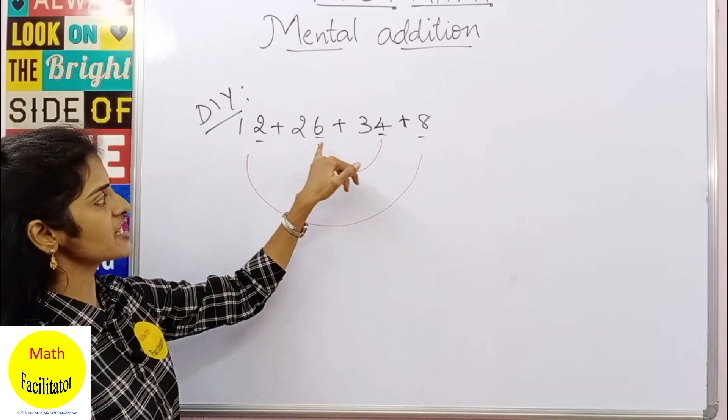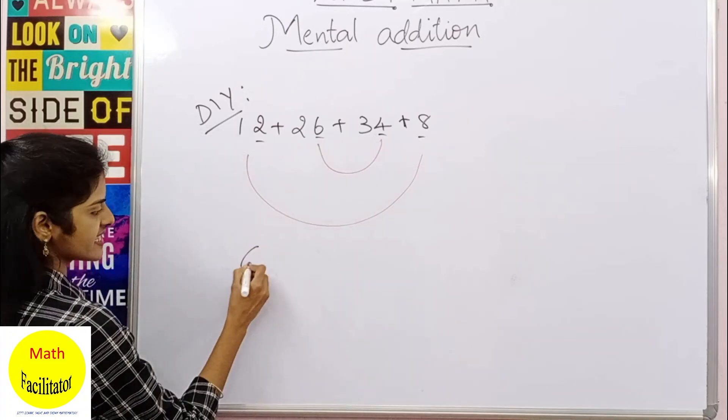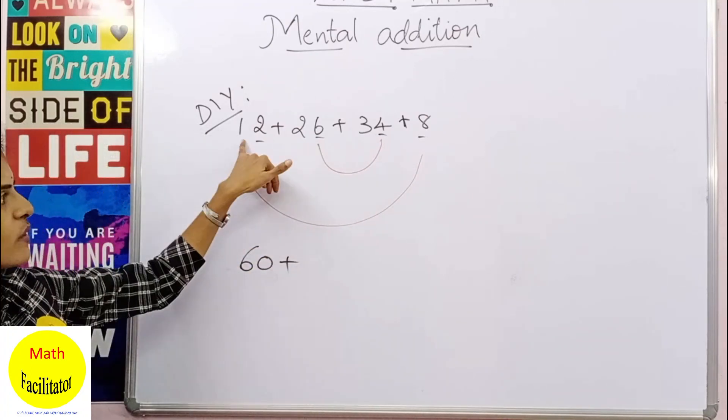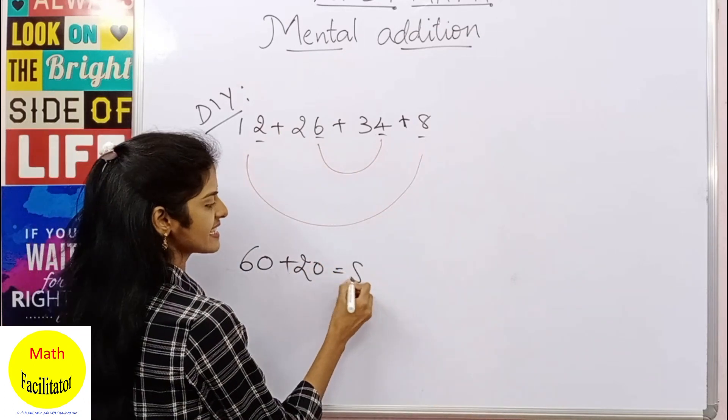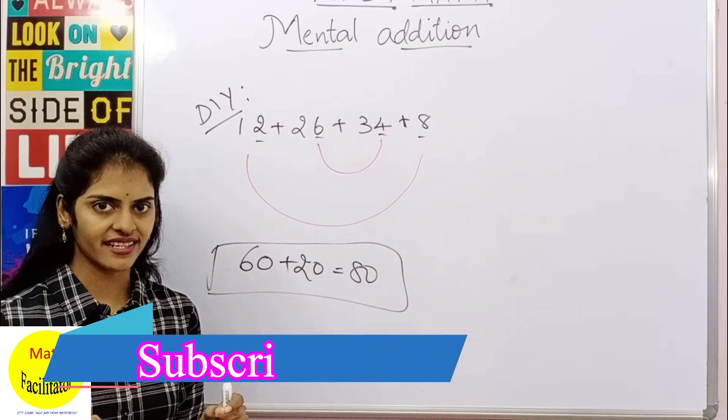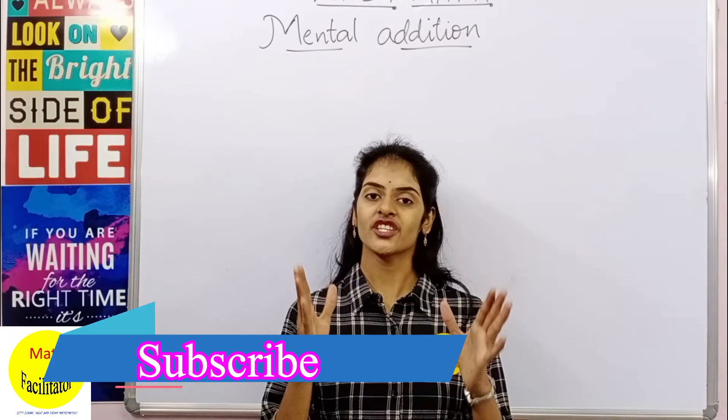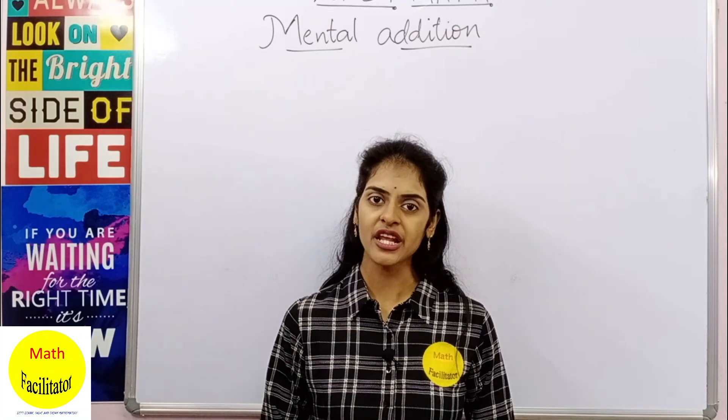26 plus 34 is nothing but 20 plus 30 is 50, and 6 plus 4 is 10, so 50 plus 10 is 60. So this is 60 plus 12 plus 8 is nothing but 20, so 60 plus 20 is 80. Even this step you can do orally in your mind if you practice. So these are the two basic methods by which you can add easily.